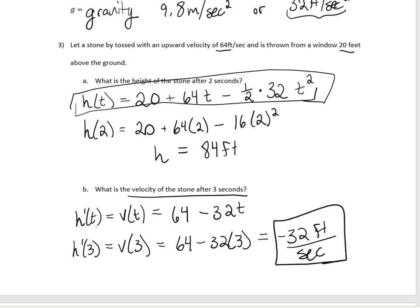What does it mean to have a negative velocity? If you're 20 feet above the ground and throw a stone, the distance between the stone and the ground is increasing on the way up, but decreasing on the way down. So negative 32 feet per second means the stone is returning back to earth.